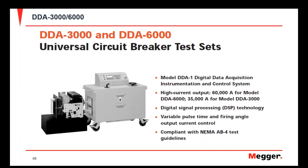Another instrument for primary injection testing is the DDA, which comes in two versions: the DDA 3000 and the DDA 6000. The DDA 3000 provides as much as 35,000 amps of test current, and the DDA 6000 provides as much as 60,000 amps of high current output. Both units are operated by the DDA 1, a digital interface for breaker testing. The unit offers variable pulse time and firing angle to negate the influence of challenges encountered during primary injection testing. This test set is also compliant with NEMA AB4 for breaker testing guidelines.